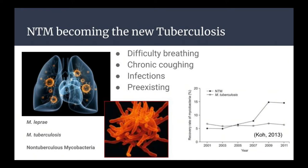It's similar to tuberculosis but it's a different species. And so it can cause difficulty breathing, chronic coughing, fatigue, weakness. And then it can also worsen your pre-existing lung conditions, and it just gets progressively more debilitating.